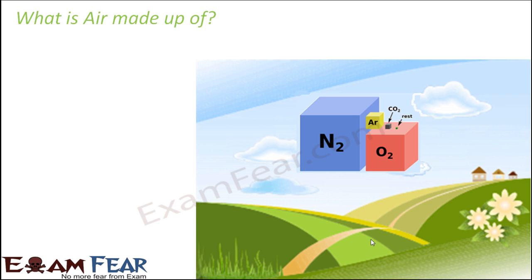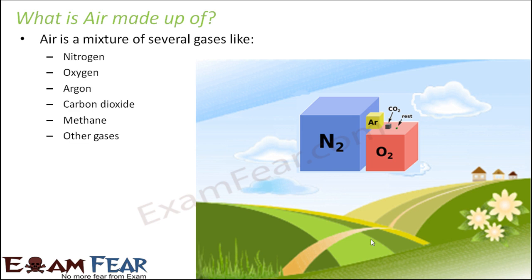Air is not just one gas but a mixture of several gases, like nitrogen, oxygen, argon, carbon dioxide, methane, and other gases present in very minute quantities. If you look at the composition of air, nitrogen is present at almost 78%, oxygen is around 20-point-something percent, and the remaining — not even one percent — is argon, carbon dioxide, methane, and other gases.